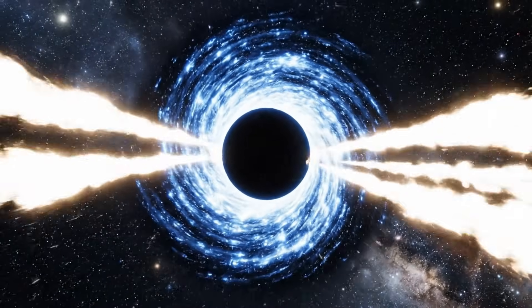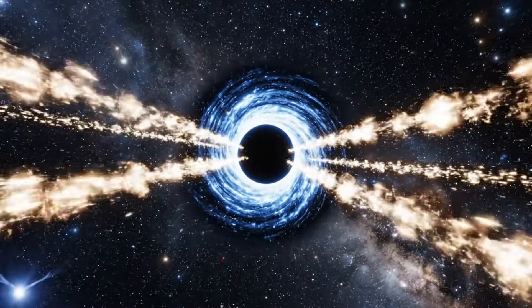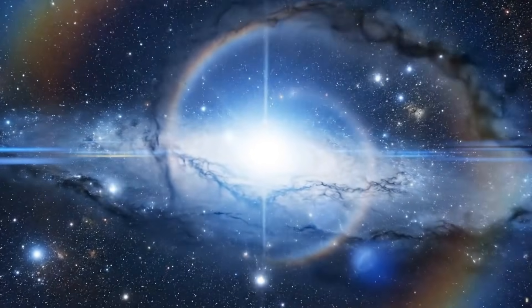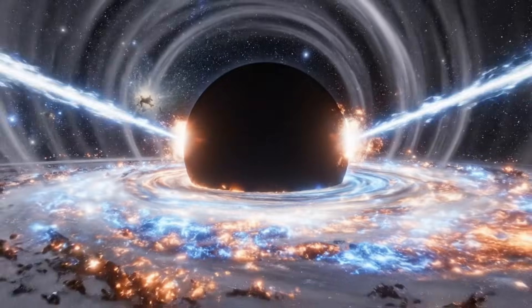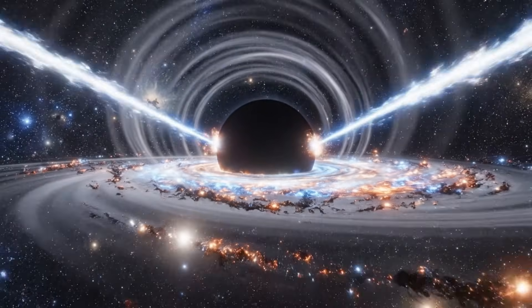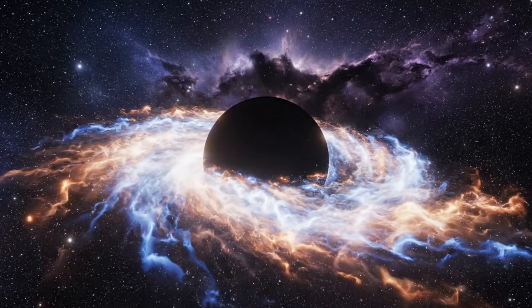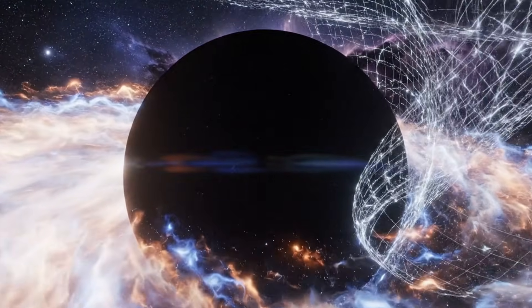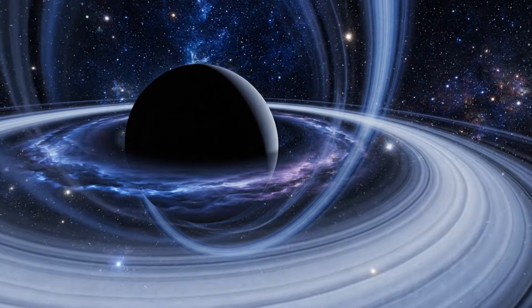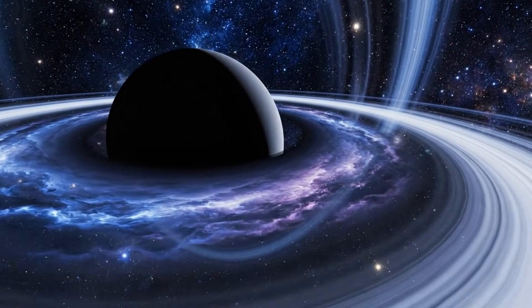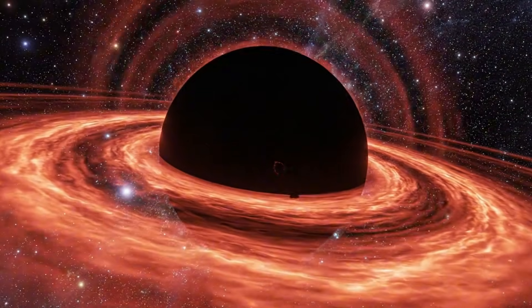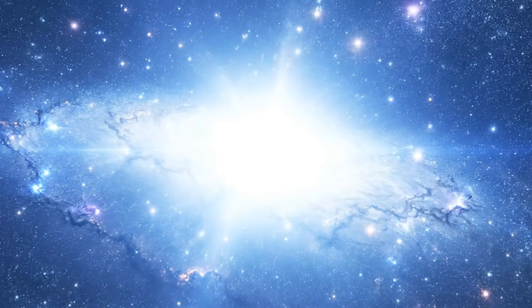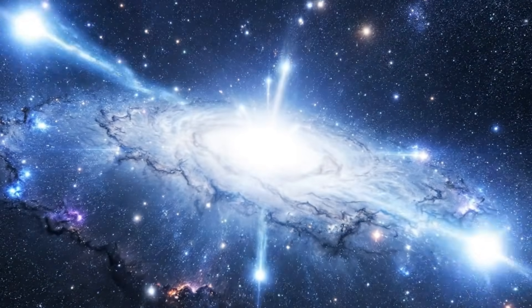Even though Ton 618 is often introduced as the largest black hole ever identified, the title is far from settled. Measuring these giants is a complicated process because it depends on what we choose to compare. Some studies focus on mass, others consider the radius of the event horizon, and others still evaluate the scale of gravitational influence. Depending on the method, different black holes rise to the top of the list. Our estimate of 66 billion solar masses carries assumptions based on the behavior of the gas surrounding the quasar, and these assumptions can shift as observational techniques improve.